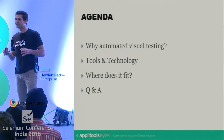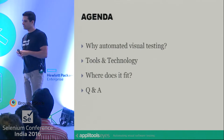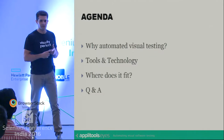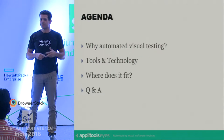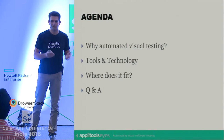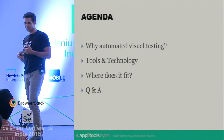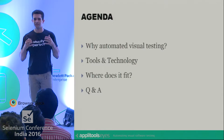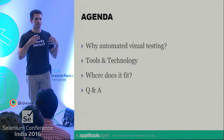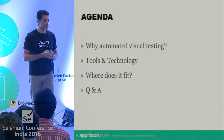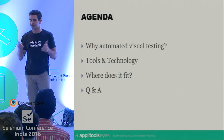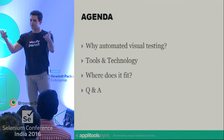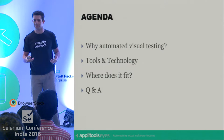We have a lot to cover in today's session. First, I'll explain what visual testing is and why it should be automated. Then we'll look at the different tools that are available, how they work, and the technology that they're based on. And we'll conclude the session by explaining how automated visual testing can fit in your development or QA lifecycle. There will be time at the end to answer any questions, but especially in this forum, feel free to stop me at any point if anything is unclear.